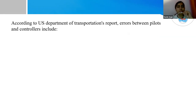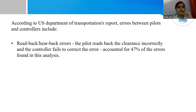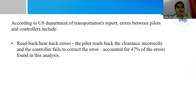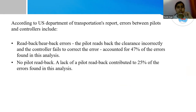According to the US Department of Transportation, errors between pilots and controllers include several types. The first error is readback or hearback errors — where the pilot reads back the clearance incorrectly and the controller fails to correct the error. This accounts for 47 percent of errors found in the analysis. The second type is no pilot readback — a lack of pilot readback contributed to 25 percent of the errors found.